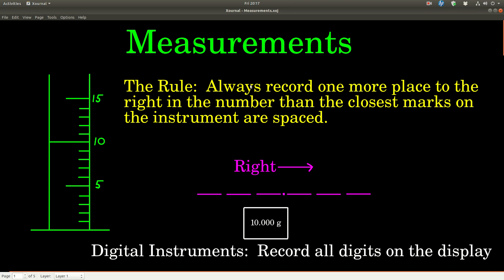Here's a rule right here in yellow. By the way, here we're talking about analog instruments, instruments that have marks on them like maybe this graduated cylinder over here with marks every one milliliter. The rule is that however far apart the closest marks are, you record one more place to the right.